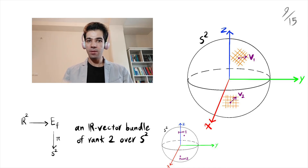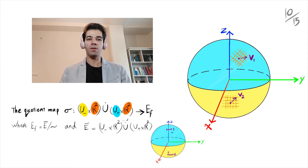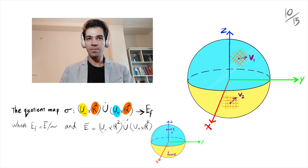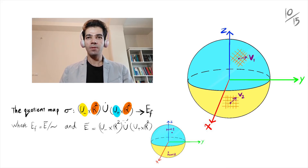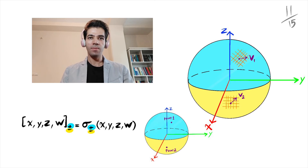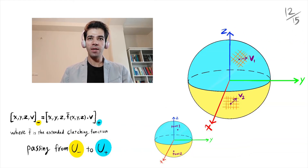Next, we have the quotient map, which formalizes the equivalence class in the vector bundle by the disjoint union of a trivial cross product. But we're going to see how, using function f, this trivial cross product turns into a non-trivial vector bundle. Naturally, the quotient map divides into two different parts — sigma-positive and sigma-negative — because we have two different domains: the northern hemisphere and the southern hemisphere. Passing from one hemisphere to the other, the extended clutching function determines how the vector in the tangent space is going to rotate.